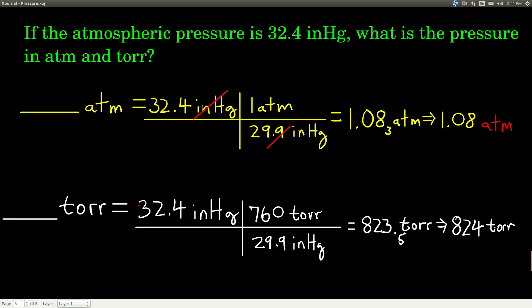For torr, again, we want to find torr. Our starting point is 32.4 inches of mercury. From that previous table, 760 torr equals 29.9 inches of mercury. The 760 is exact, but the 29.9 only has three sig figs. We set it up this way, inches of mercury cancel, we're left with torr, and we get 825 torr.